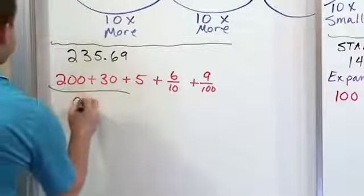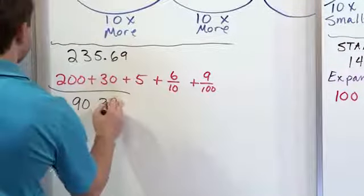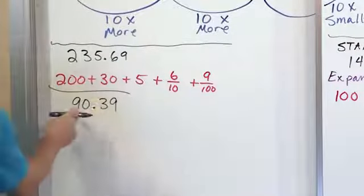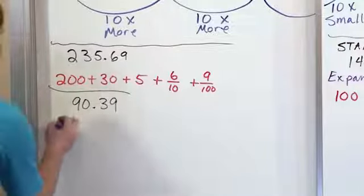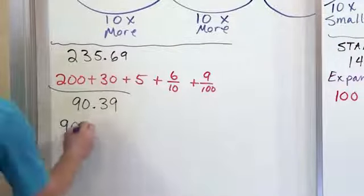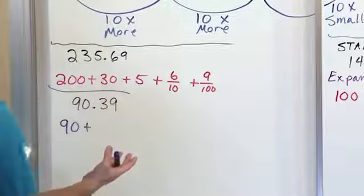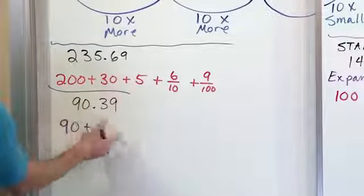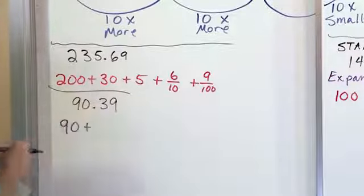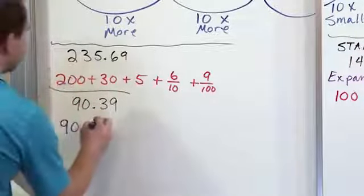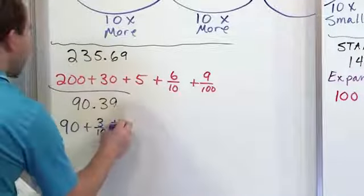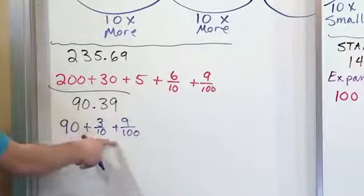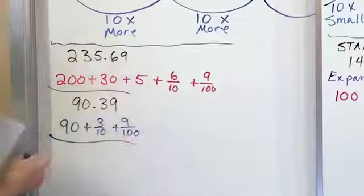Let's do another one. We have 90.39 and we want to write it in expanded form. We don't have any hundreds, but we do have something in the tens place — the nine is worth 90. Then we have a zero in the ones place, but there are zero of them so we don't write anything. The zero is worth nothing. Then after the decimal, the three is in the tenths place so we say three-tenths. The nine is in the hundredths place, so we say nine one-hundredths. So we have 90 plus three-tenths plus nine one-hundredths.